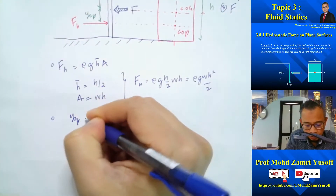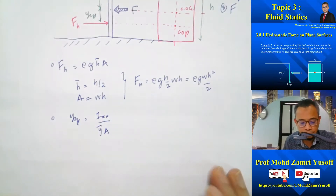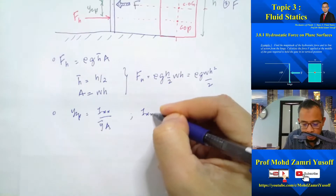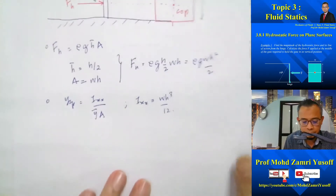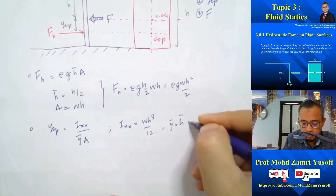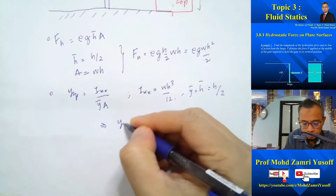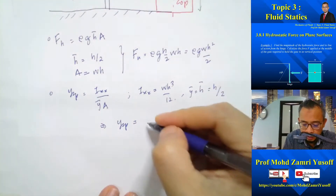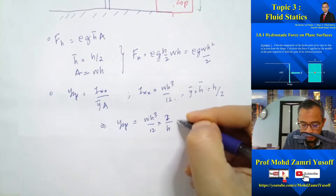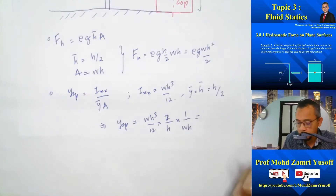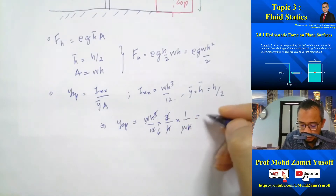Then the formula for YCP is I_XX over Y̅A. In this case Y bar equals H bar. For a rectangular shape, I_XX = WH³/12. Y bar equals H bar equals H/2. So YCP = (WH³/12) × (2/H) × (1/WH), which gives YCP = H/6.